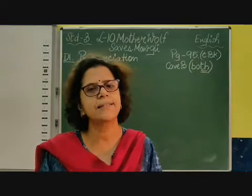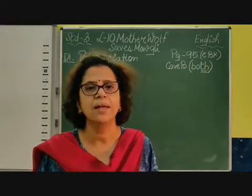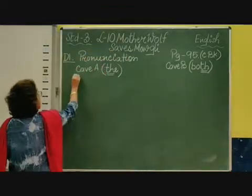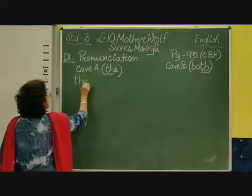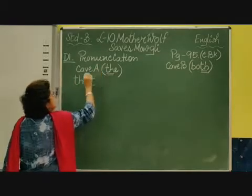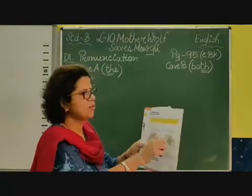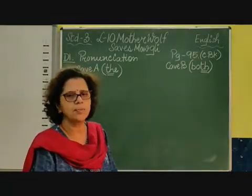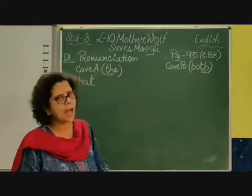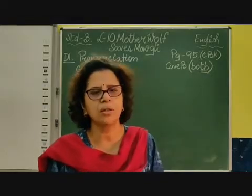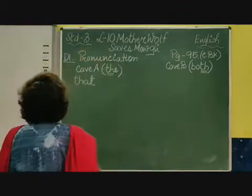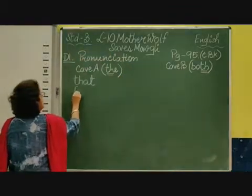So the first word is 'that'. We don't say TH hard — that is wrong. It is 'that', soft and unvoiced. So it will come in cave A. Good children? They have given two caves — the TH family's cave — and you have to write the words in both caves according to the pronunciation. 'That' is soft, so it goes in cave A. Coming to 'father' — we don't say 'father' with a hard TH, it is 'father', unvoiced. So father will also come here.